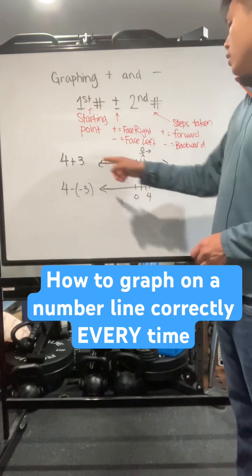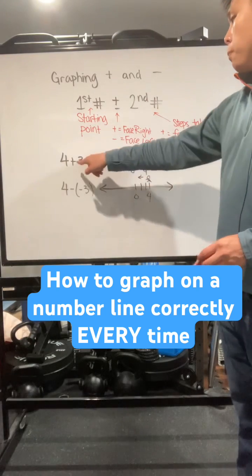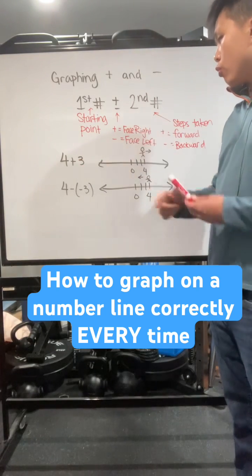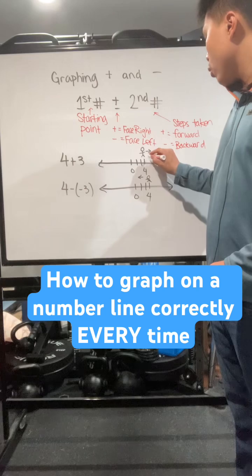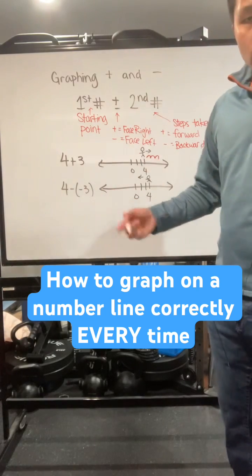So let's look at this. First number, four, starts right here. Plus three. Plus, you're facing to the right. Three, you're moving forward. So it's going to be three, which is going to be seven.